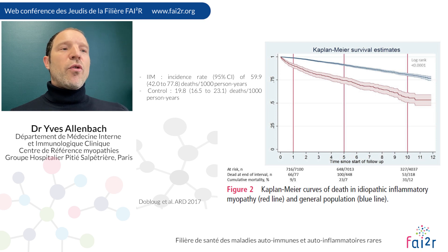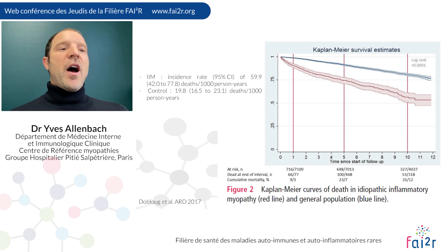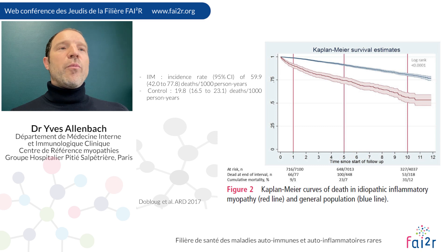Concerning antisynthetase syndrome, there are different autoantibodies. Jo-1 is the most prevalent, occurring in roughly 80% of patients. After that, some patients are PL7 or PL12 positive, and the remaining antibodies associated with antisynthetase syndrome are quite rare. It is important to know that there is still increased mortality in myositis patients compared to the general population, and one of the main leading causes of mortality is ILD — a common feature in both MDA5 and antisynthetase syndrome.